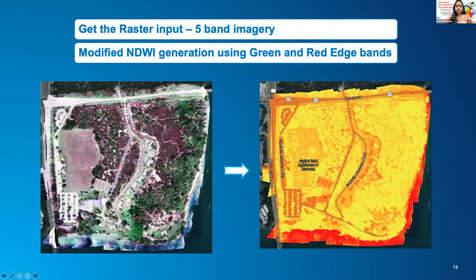The five-band imagery, seen here on the left, is used to generate NDWI. In common, NDWI uses near-infrared and green, or near-infrared and shortwave infrared. But we modified this NDWI by using green and red-edge bands.